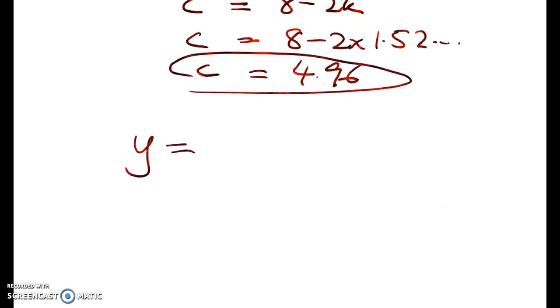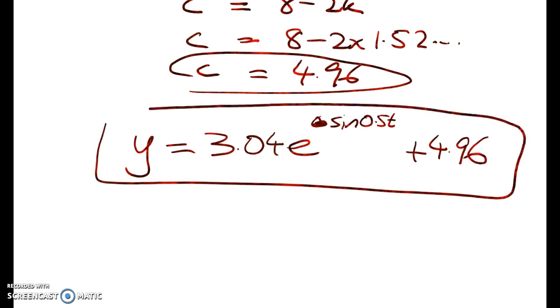So we get y is equal to 3.04e to the sine of 0.5t plus 4.96. I've got to say, in the big scheme of NCEA level 3 calculus exams, these are some of the most boring numbers ever.